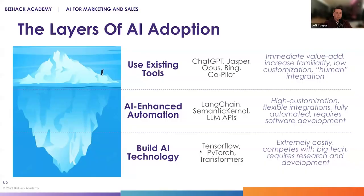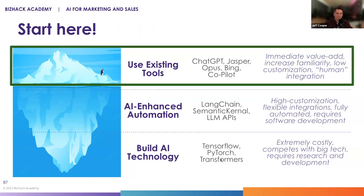We're using ChatGPT — that's awesome. How deeply do we want to integrate this into our company? There are really three layers of integration in terms of how you adopt these AI tools. The first layer — where you should start — is to use existing tools. This is what we've been talking about this whole time: use ChatGPT, check out Opus, use Bing's AI tool. Make sure you're getting familiar with these tools and starting to use them in your practices, because if you do that, you have some immediate value add. The important thing for you as a business owner is to make sure you know what these things are capable of and how they fit into your workflows.